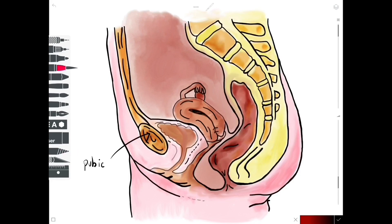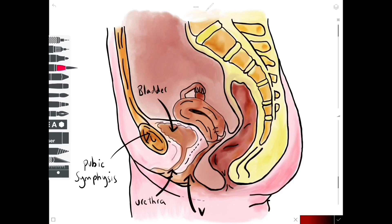Most anteriorly we have the pubic symphysis, a key landmark of the region. As we move inferiorly and posteriorly through the perineum, we can see the opening of the urethra, and that is of course continuous with the bladder more superiorly. As we move more posterior, we can see the opening of the vagina and the continuation of the muscular tube which is the vagina, as we pass the perineal body.